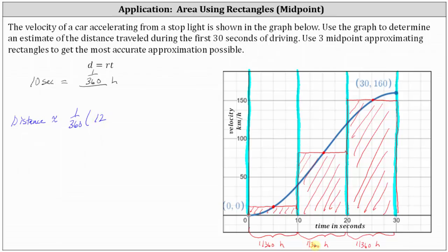Because all the widths are 1/360, we multiply the width by the sum of the heights. The height of the second rectangle is approximately 82, and the height of the third rectangle is 150. Distributing, we have one divided by 360 times the sum in parentheses, which is 12 plus 82 plus 150, giving us 244.